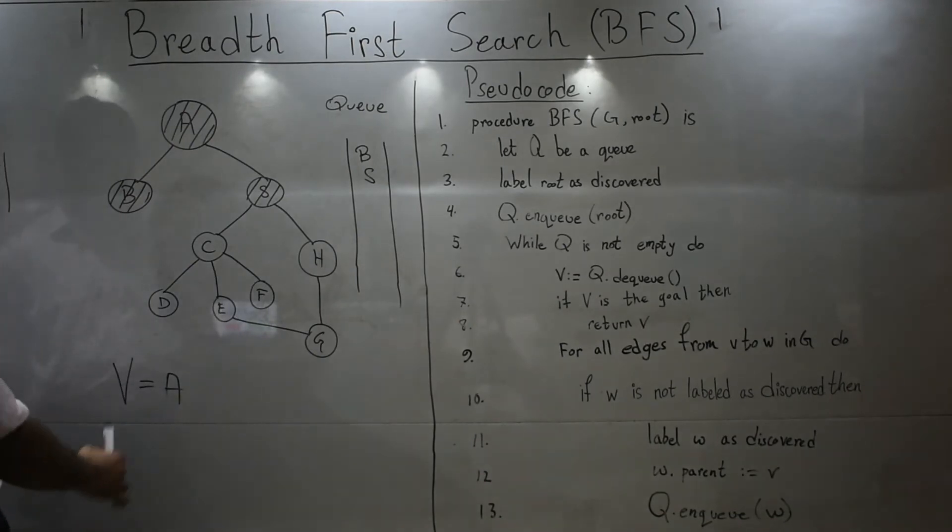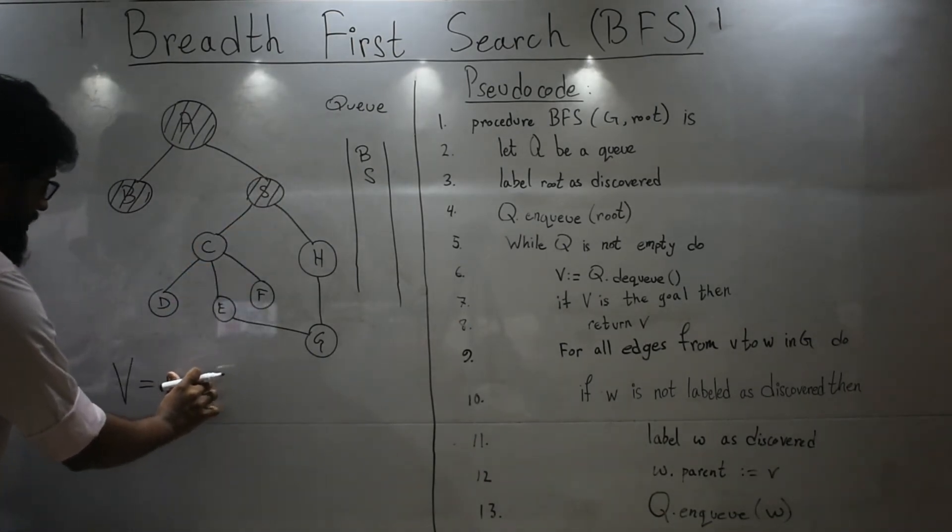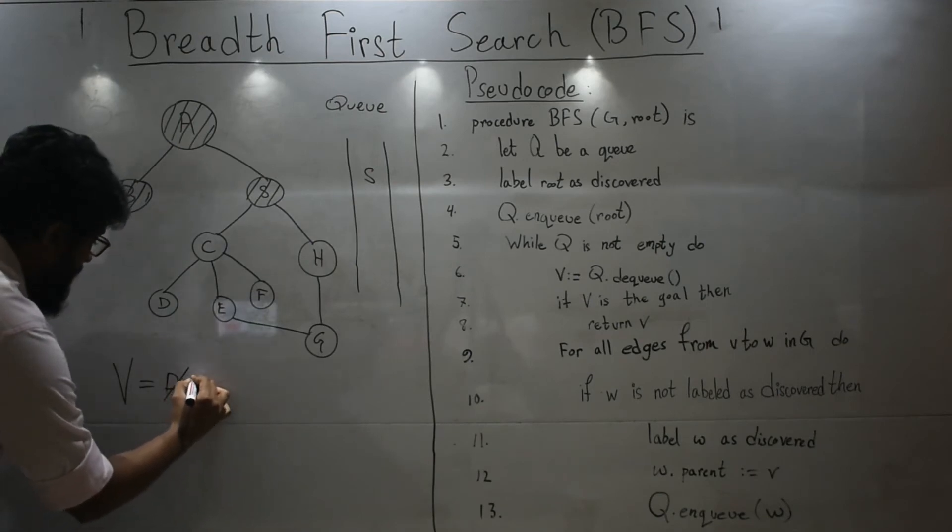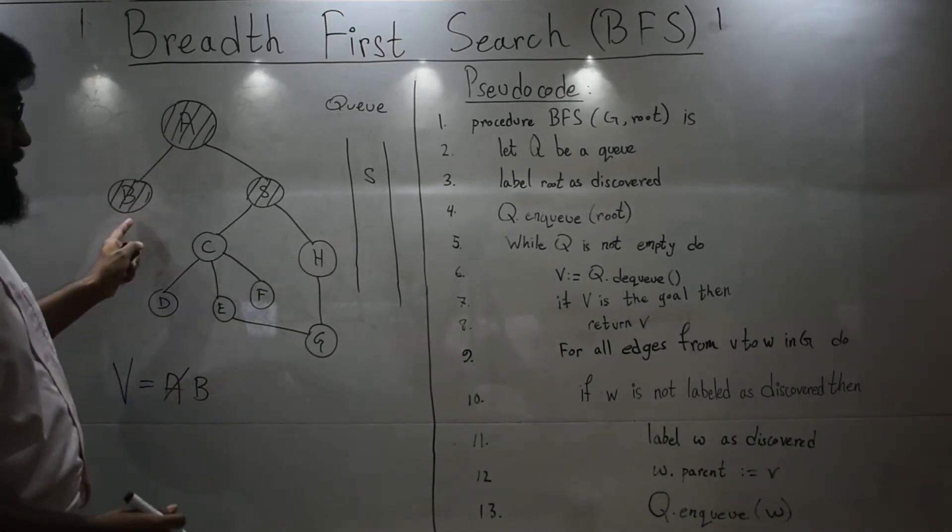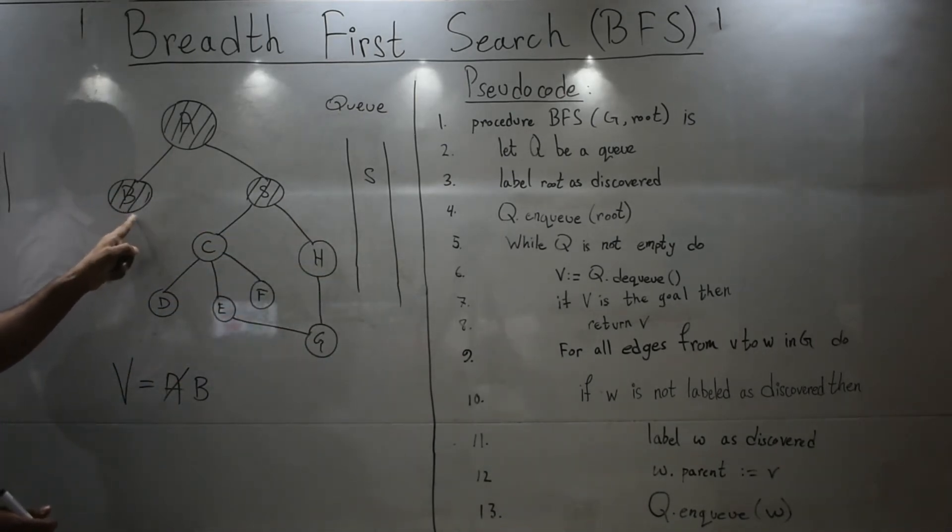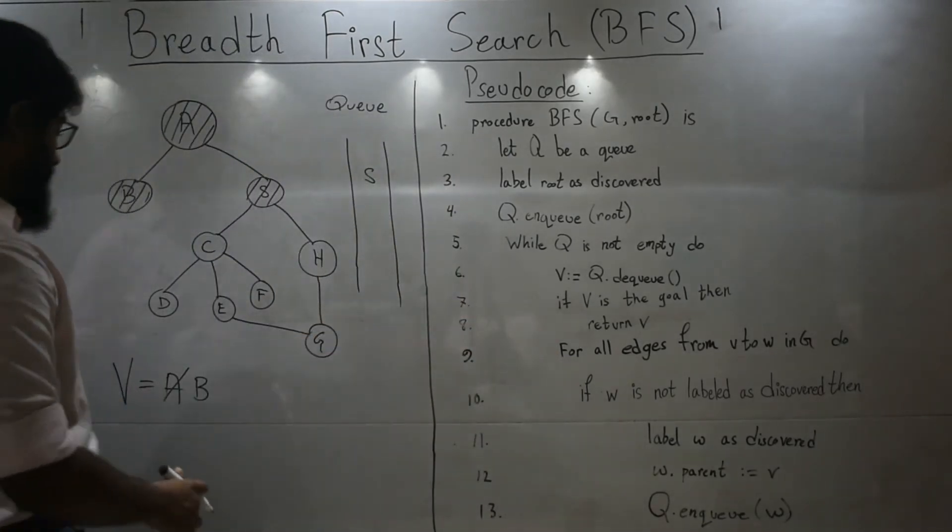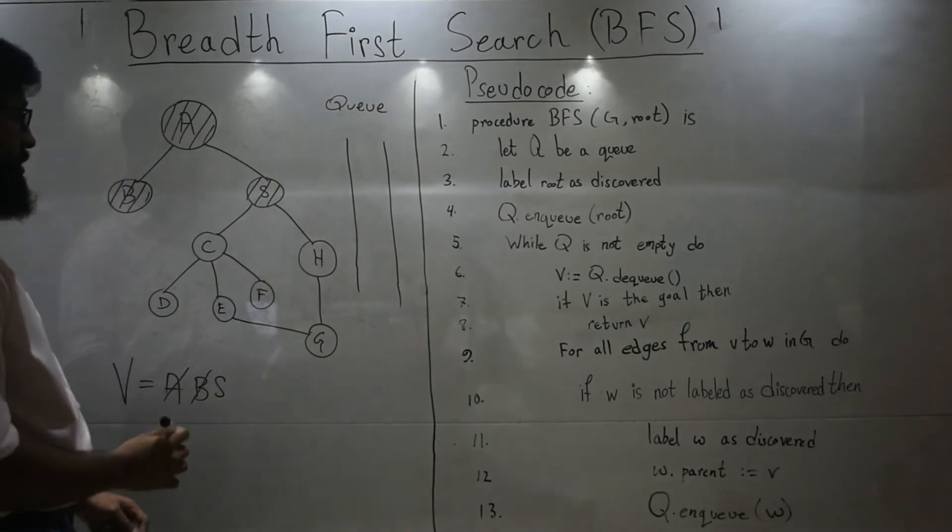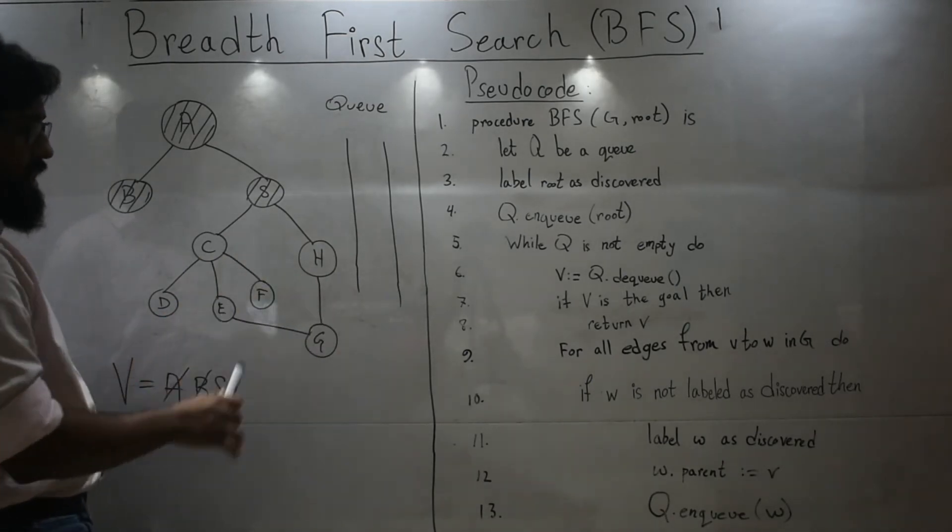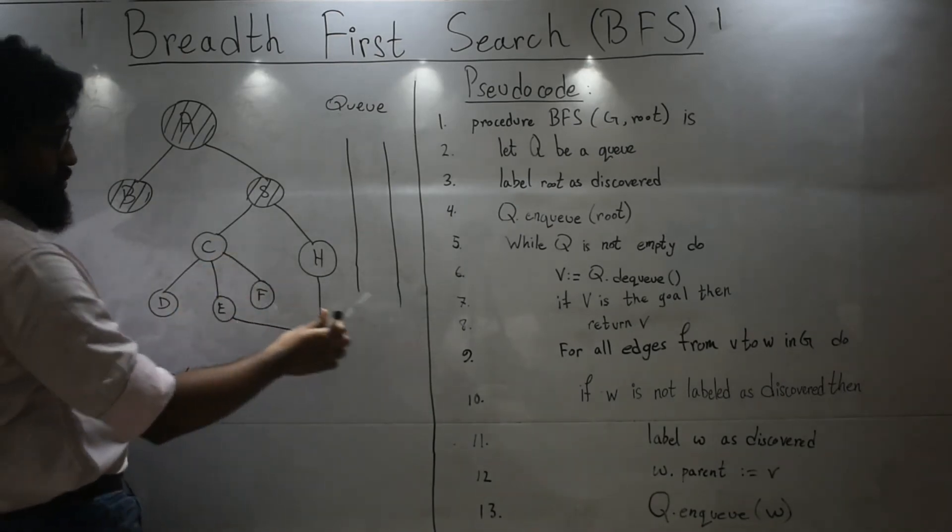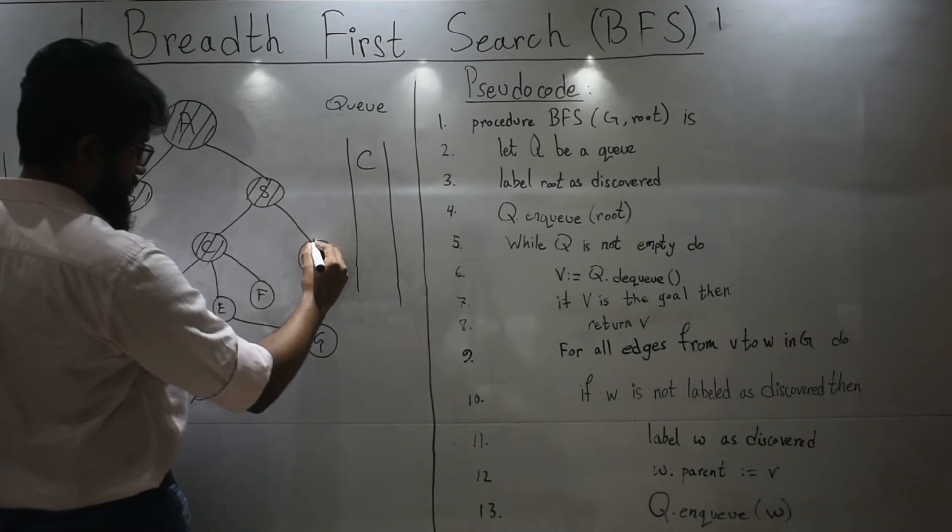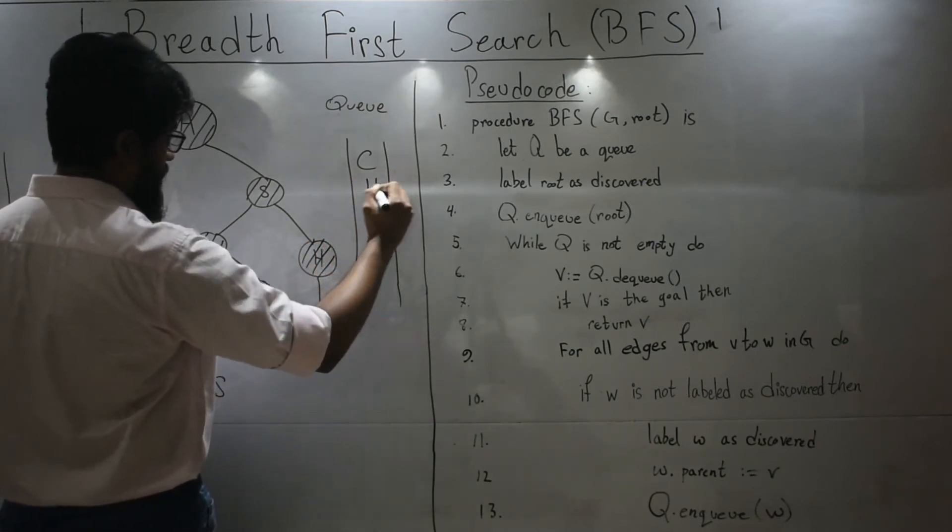Now we will go up again. Now we will dequeue. Let's dequeue and update the value of V. Now let's again try all this. Does this have an undiscovered adjacent or neighbor? No. So it will just skip all this and again come over here. Dequeue. Let's write S over here. Does S have undiscovered neighbors? Yes. So what we will do? We will do all this. Discover, enqueue, discover, enqueue.